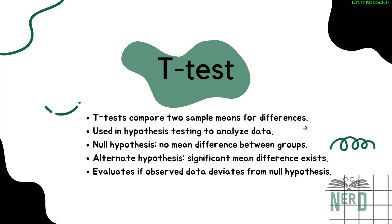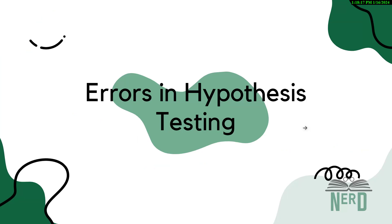T-tests are like referees in a one-on-one basketball game — they compare just two samples or groups. They focus on finding out if the average scores (means) of these two groups are different enough to be significant, or if they are just coincidentally different. In simple terms, these tests help you make sense of your data and tell you if what you're seeing is likely real or just by chance — they're tools to help validate your findings and make sure you're on the right track.